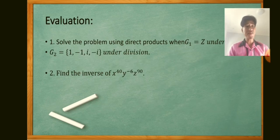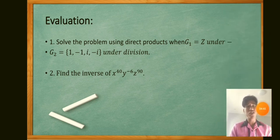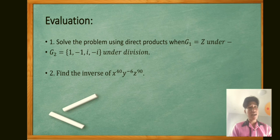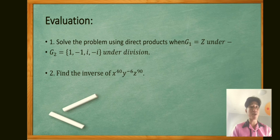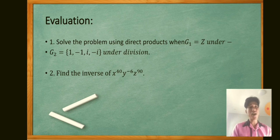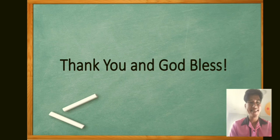That's all for today — that's all for direct products and generated sets. For your evaluation: solve the problem using direct products when G1 is Z under subtraction and G2 is {1, -1, i, -i} under division. Also, find the inverse of x⁴⁰, y⁻⁶, z¹⁹. This will be posted in our Google Classroom, so please answer it. Thank you and God bless us all.